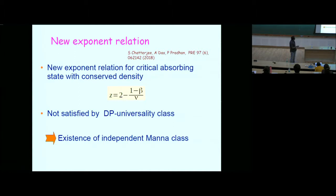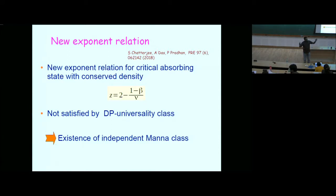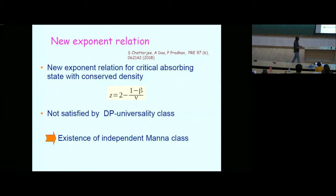A hydrodynamics result gives a new exponent relation: z = 2 − (1 − beta)/nu, which is satisfied by the Manna/conserved critical state but NOT by DP. DP exponents are known to three or four decimal places, and if you substitute them, this equation is not satisfied. This is derived for critical absorbing states with conserved density, so it would hold for Manna, Oslo, and similar sandpiles. If the relation doesn't hold for DP, that supports the existence of an independent Manna class.